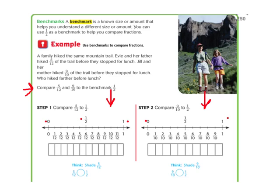Example: a family hiked the same mountain trail. Evie and her father hiked 5 twelfths of the trail before lunch; Jill and her mother hiked 9 tenths of the trail before lunch. Who hiked further? First I'll do 5 twelfths: between 0 and 1 they've made fraction strips with 12 parts, so I color in 5 of them: 1, 2, 3, 4, 5. My 5 twelfths ends right here — marking it on the number line, it's pretty close to but still a little bit smaller than 1 half, so 5 twelfths is less than 1 half.